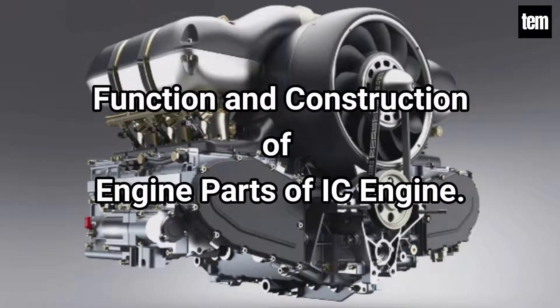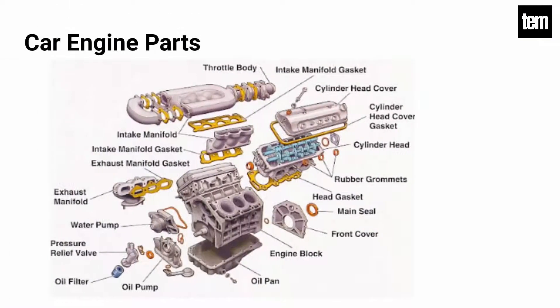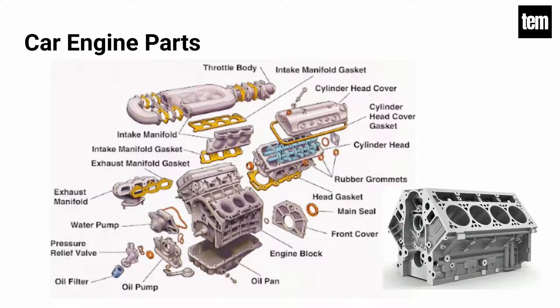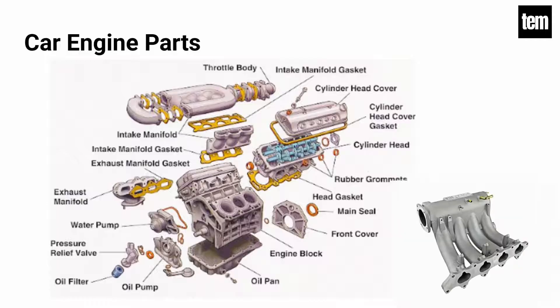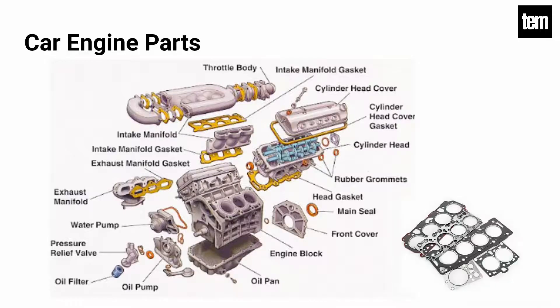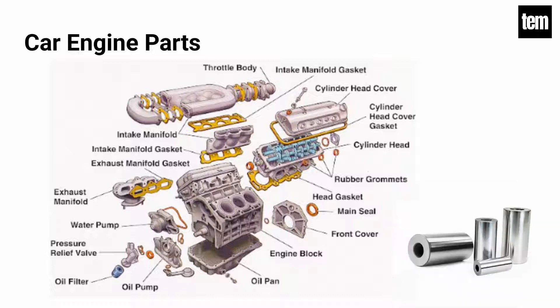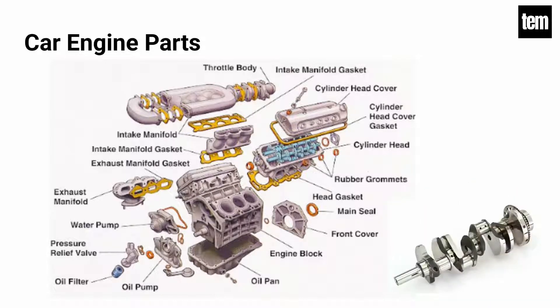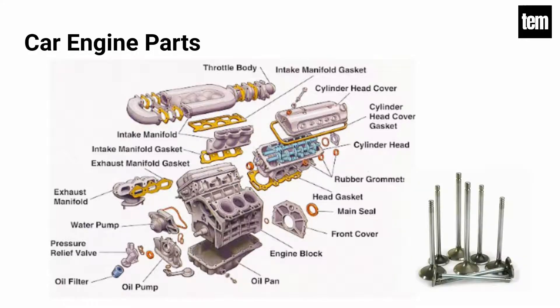So in this video we will be talking about the function and construction of each engine part of an IC engine. Main parts of a car engine are: cylinder block, cylinder head, crankcase, oil pan, manifolds, gaskets, cylinder liners, pistons, piston rings, piston pin, connecting rod, crankshaft, camshaft, flywheel, and engine valves.